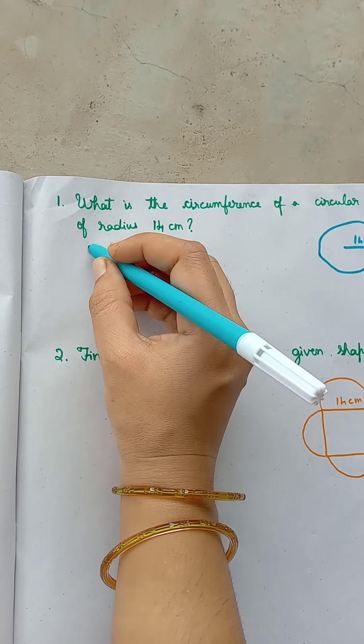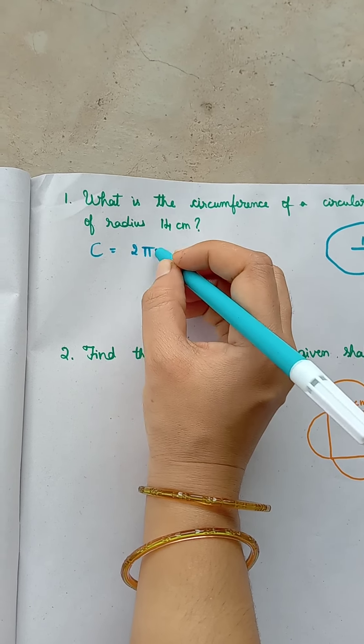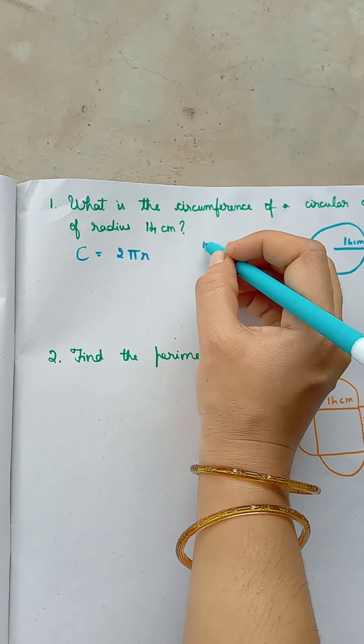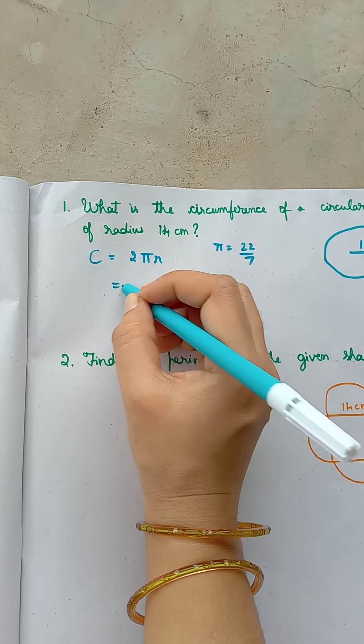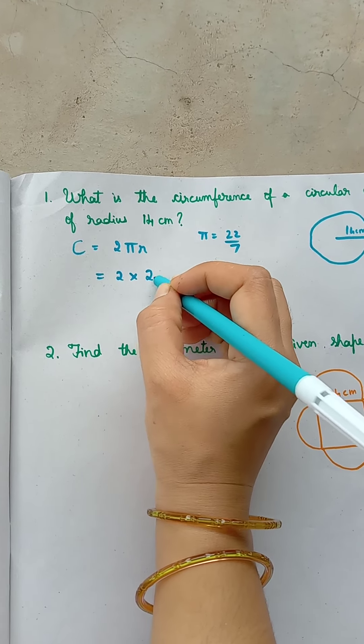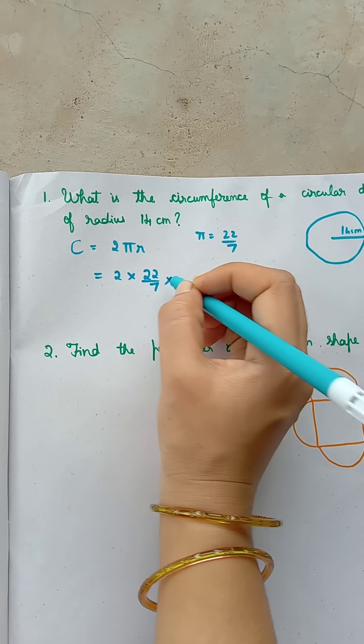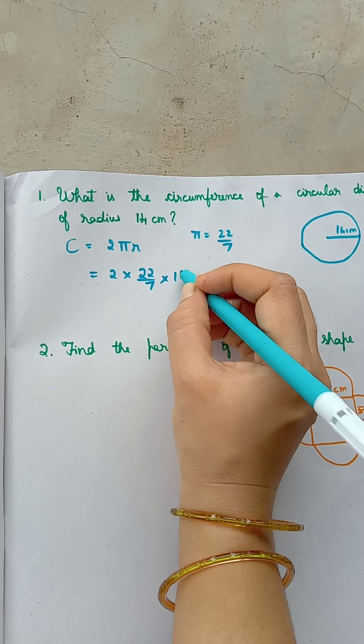So circumference of a circle is given by 2πr. Pi is equal to 22 by 7. So you have 2 into 22 by 7 into r is 14 cm.